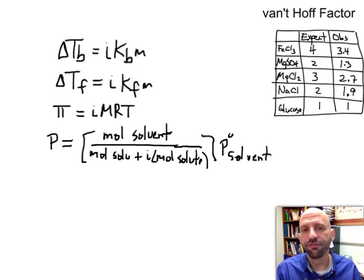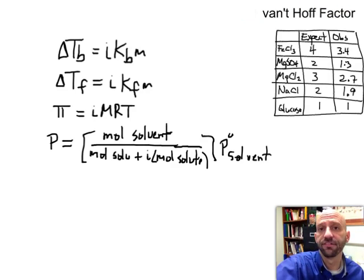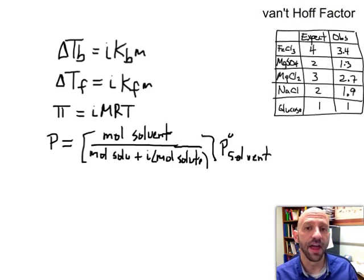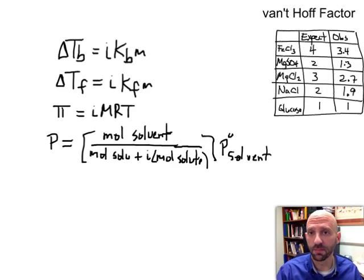So we can formally account for the presence of ionic solutes using something called the van't Hoff factor. So a chemist named van't Hoff was one of the first folks to recognize this issue that ionic compounds are going to affect the magnitude of colligative properties.